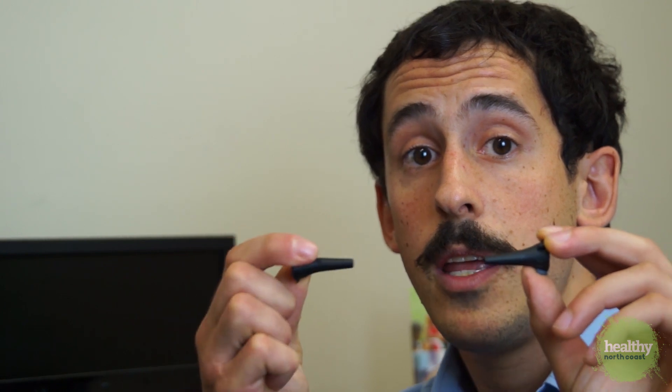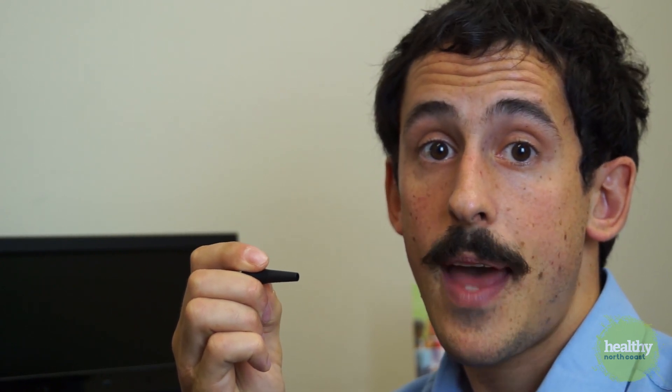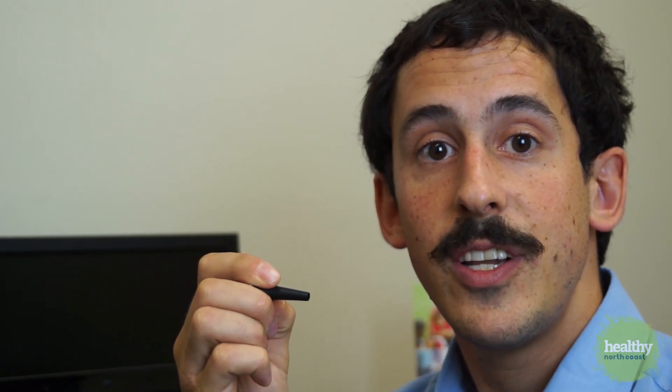If you want to do pneumatic otoscopy to see how mobile the eardrum is, you can attach a special rubber end. If you don't have a pneumatic otoscope, you can sometimes convince older patients to move their eardrums by plugging their nose, closing their mouth, and trying to breathe out. The patient will feel a sensation like they're popping their ear — like when you've been in an airplane and felt your eardrums pop.